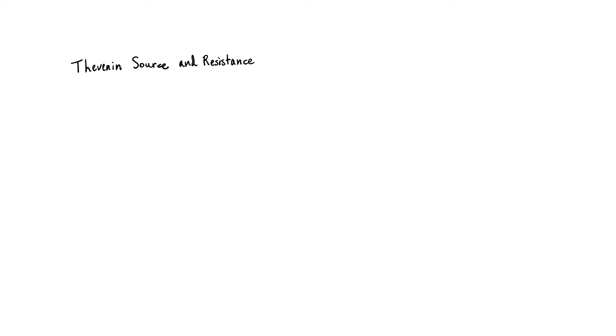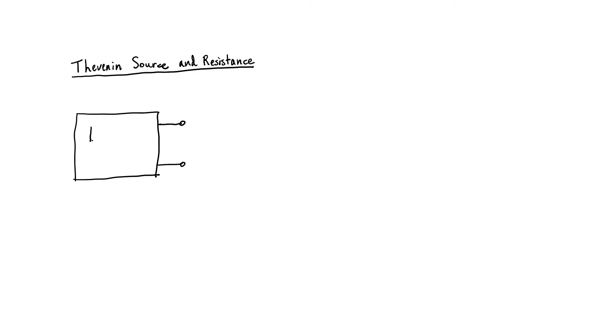Thevenin's theorem says that we can take any combination of linear circuit elements and represent them with just a single Thevenin equivalent source and a single Thevenin equivalent resistor. It means that while a circuit in reality might be very complicated, we can at least represent it from the outside, from two terminals looking in, by a very simple equivalent circuit.